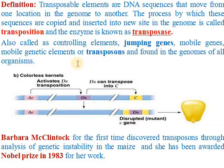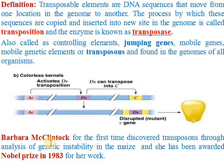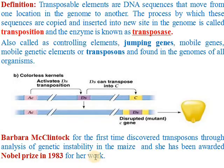The DNA sequence is fixed at its position. But later on, in the 1940s, Barbara McClintock talked about this for the first time. She reported that in maize, there are some DNA sequences that move from their original position to another position. For this work, she was awarded the Nobel Prize in 1983.